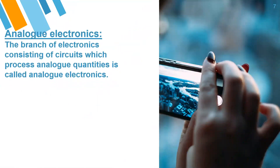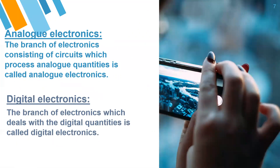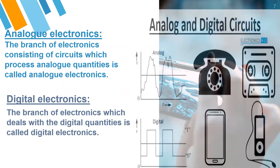What are analog electronics and digital electronics? The branch of electronics consisting of circuits which process analog quantities is called analog electronics. The branch of electronics which deals with digital quantities is called digital electronics.